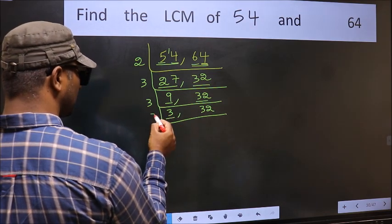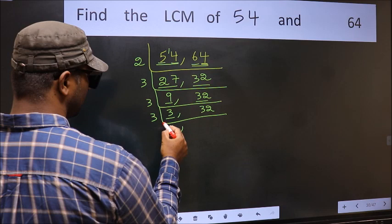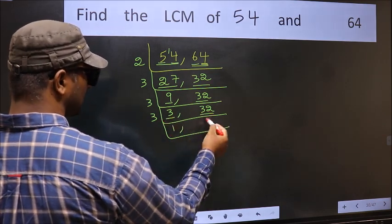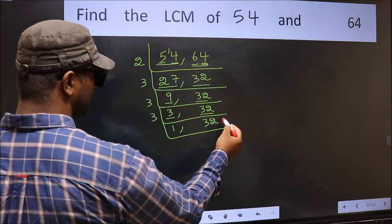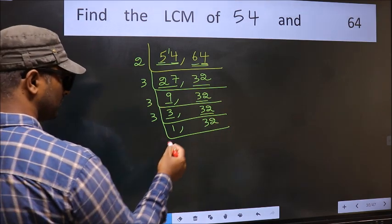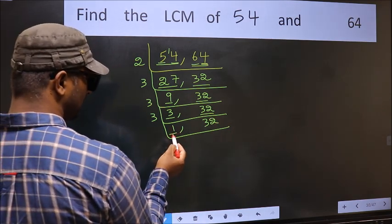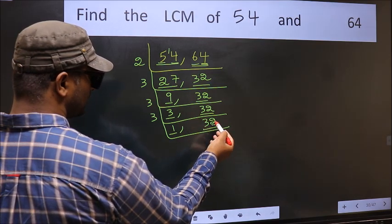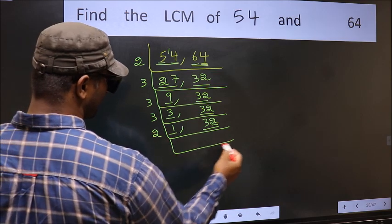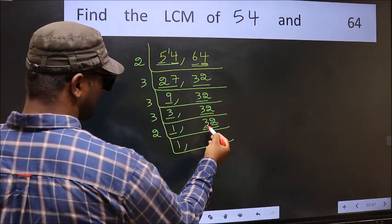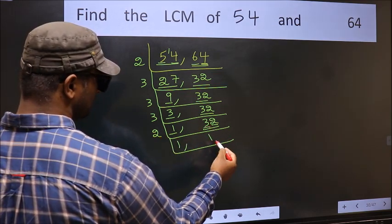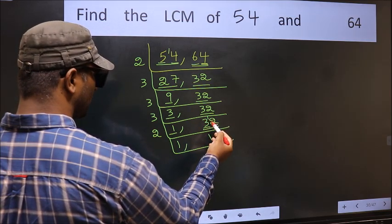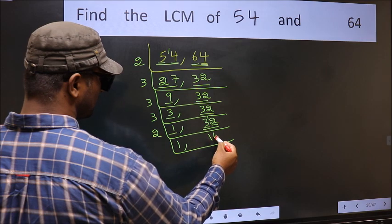Now we got 1 on the left side, so focus on the other number, 32. The last digit is 2, which is even, so take 2. The first digit is 3; a number close to 3 in the 2 times table is 2 ones = 2. 3 minus 2 = 1, carried forward gives 12. We get 12 in the 2 times table at 2 sixes = 12. So 32 divided by 2 gives 16.